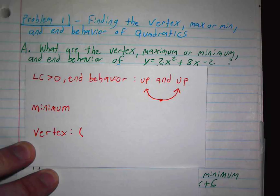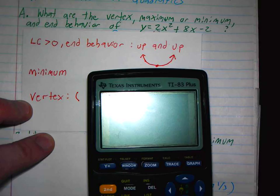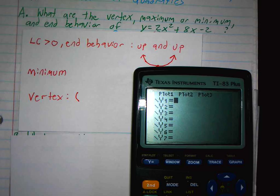To find the vertex, you can either use negative b over 2a, which is where you would take 8 divided by 2 times 2. 8 by 4 is negative 2. And then we plug negative 2 in here to get the y-coordinate. That's one way to do it.